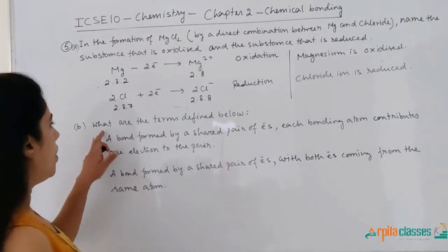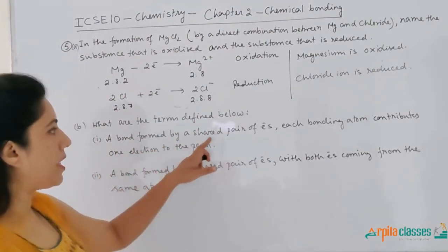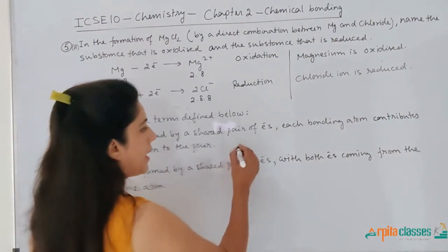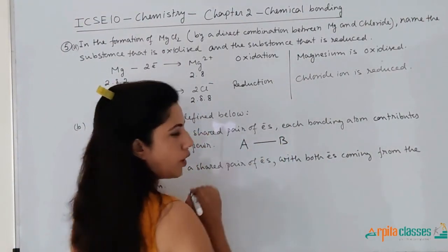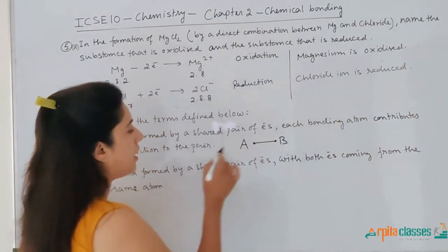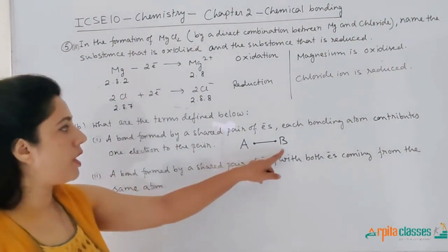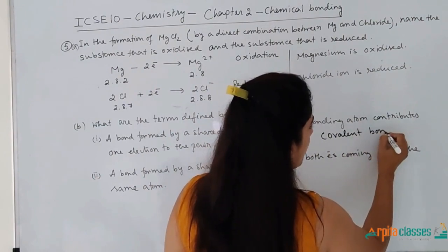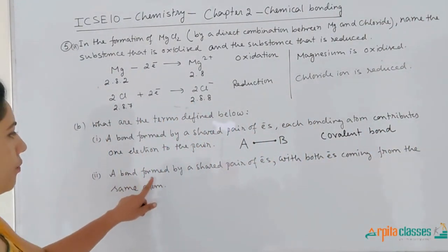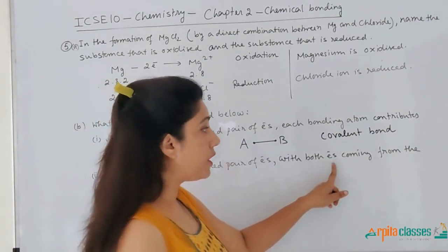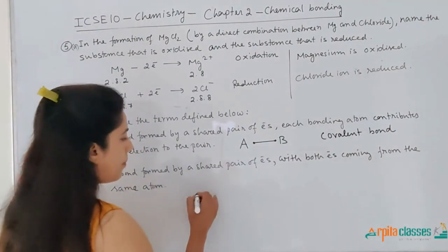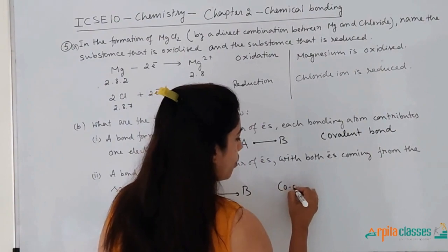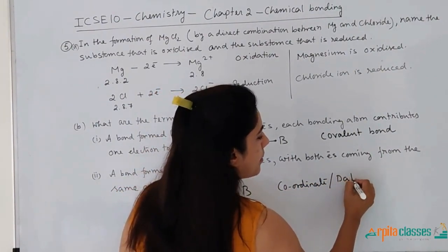What are the terms defined below? A bond formed by a shared pair of electrons where each bonding atom contributes one electron to the pair — this type of bond is called a covalent bond. A bond formed by a shared pair of electrons with both electrons coming from the same atom — this type of bonding is called a coordinate bond, also known as a dative bond.